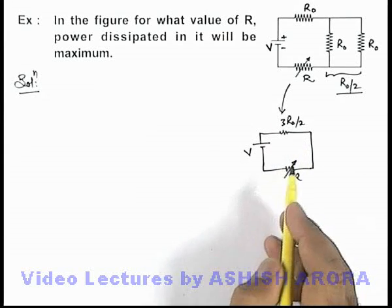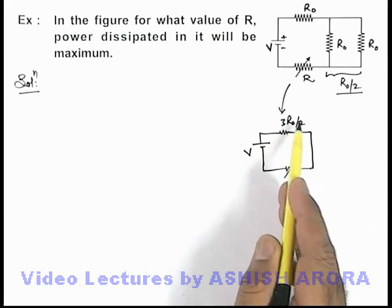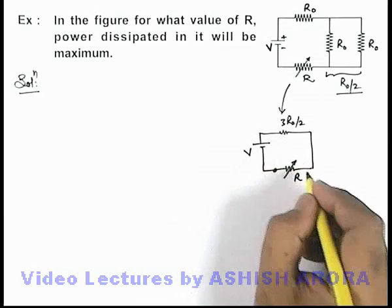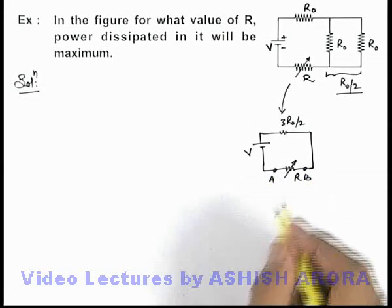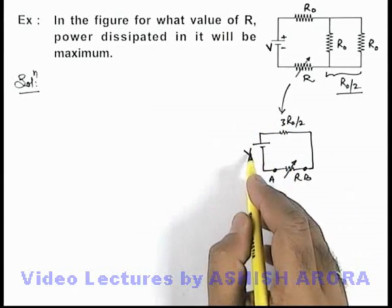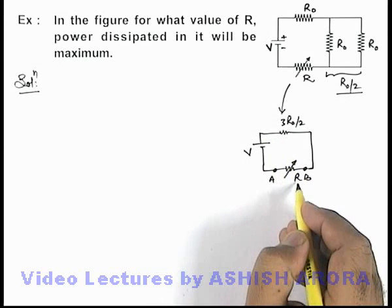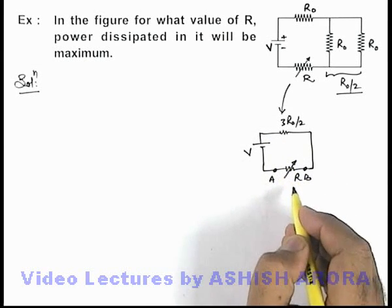Now if this is the equivalent circuit, here we can say that this 3R_not by 2 resistance can be considered as the internal resistance of this source, if we consider R as an external resistance across terminals A and B. So for this equivalent battery, V will be the EMF and 3R_not by 2 can be taken as internal resistance of this source, connected across the variable resistance R.